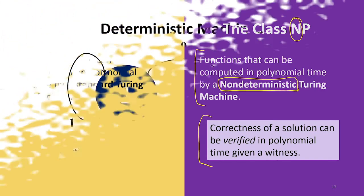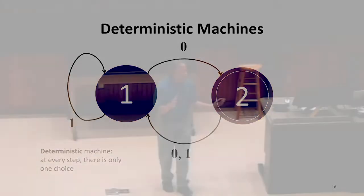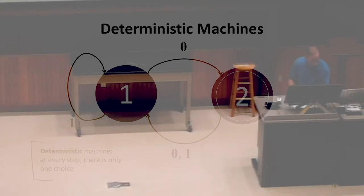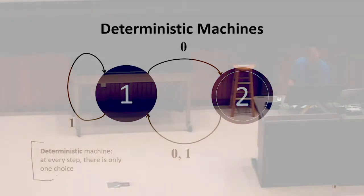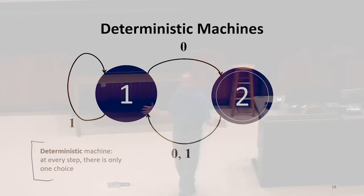Let's start with deterministic finite automata. They're machines where at every step you know exactly what to do. You have a rule, you look it up, there's no uncertainty — you do what that rule says. There is only one choice at every step. For whatever state you're in — meaning the entire configuration — you know exactly what's going to happen next. That's what it means to be deterministic.